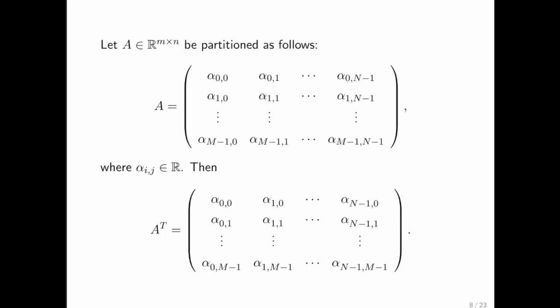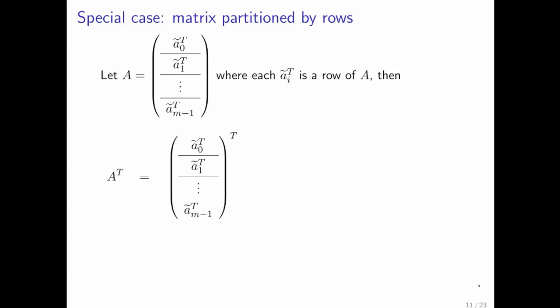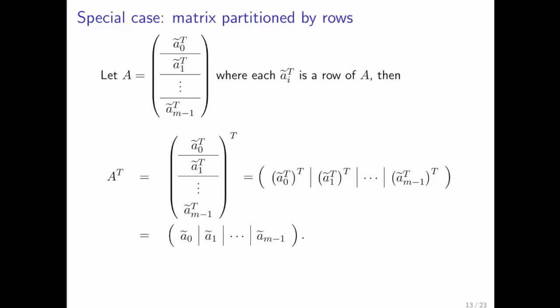And you get right back to the original definition of the transpose of a matrix. Let's look at some special cases. If you start with matrix A and partition it into rows — as we saw last week — and you transpose it, you would put that column of symbols and transpose it into a row of symbols, except that each of the symbols themselves ends up having a transpose on it. What you notice is that what was a row in matrix A becomes a column in A transpose, which just confirms what you saw last week.